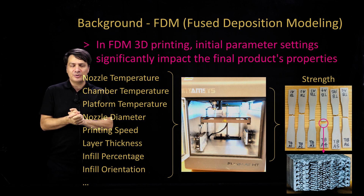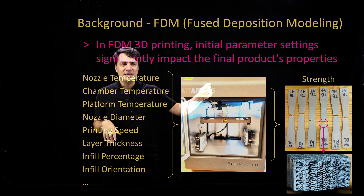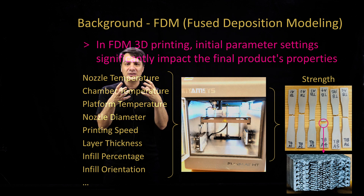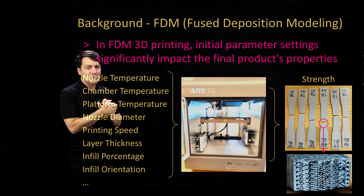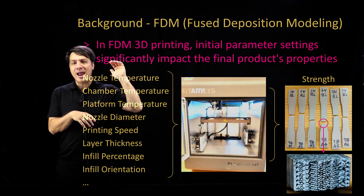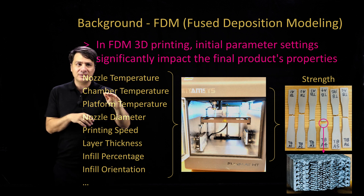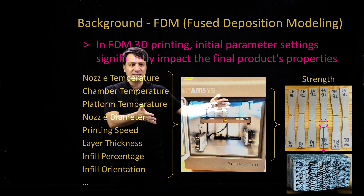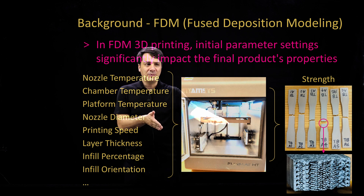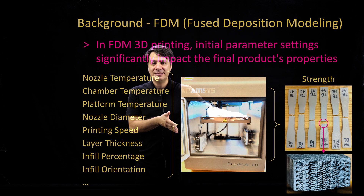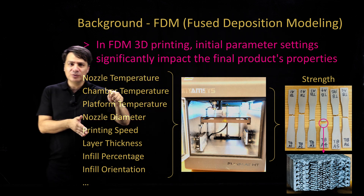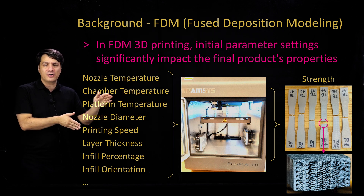Nozzle temperature is one parameter — when you are printing, the material is melted and extruded through a nozzle which is heated above the melting temperature of the material. You can set that temperature quite higher or very close to the melting point. The 3D printer chamber itself can be heated to a specific temperature, and the platform you are printing on can also be heated. These temperatures can all be set and fine-tuned to affect the quality of the part.